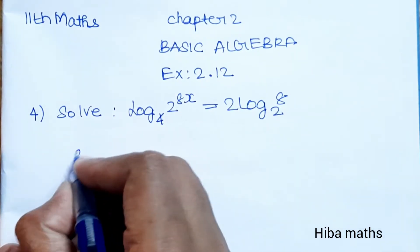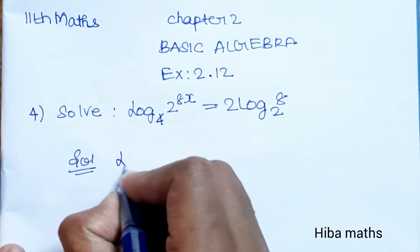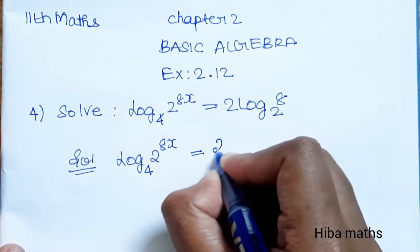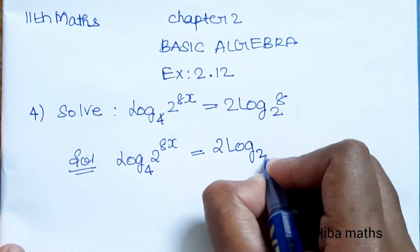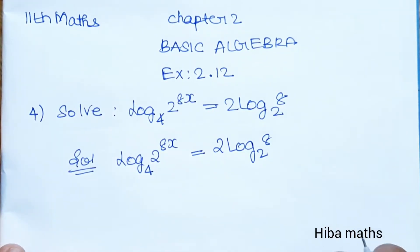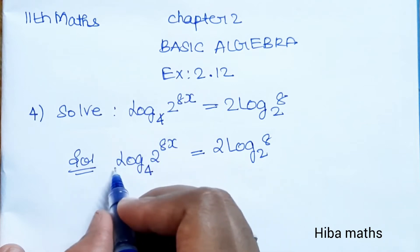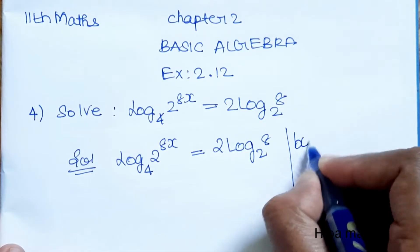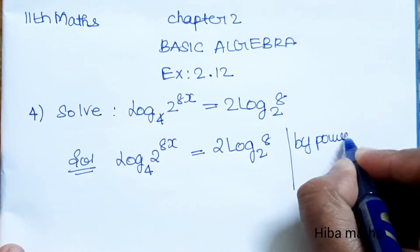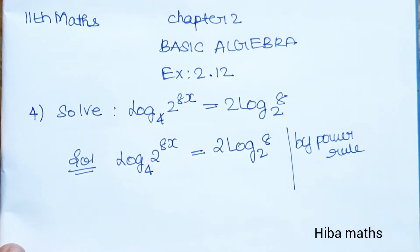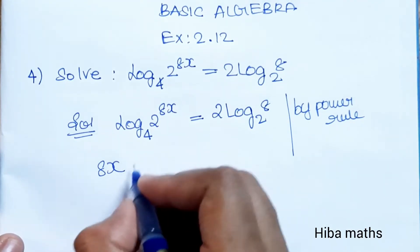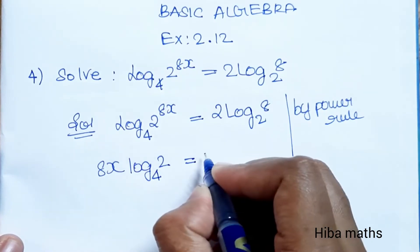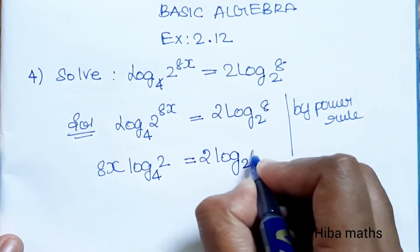Now we will solve the solution. Given: log base 4 of 2 power 8x, which is equal to 2 into log base 2 of 8. Next line, by power rule, 8x into log base 4 of 2 is equal to 2 into log base 2 of 8.